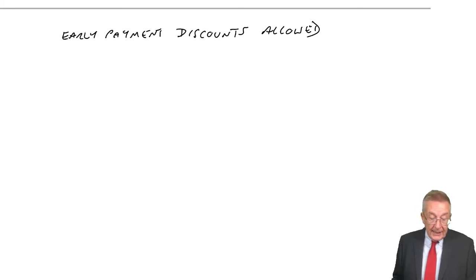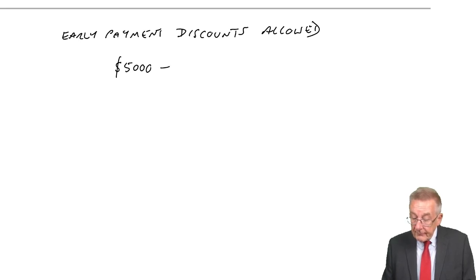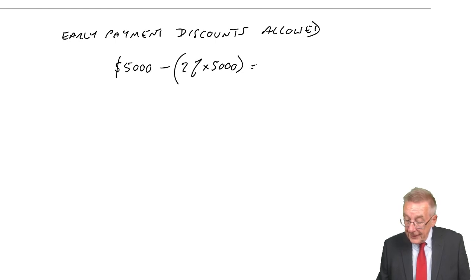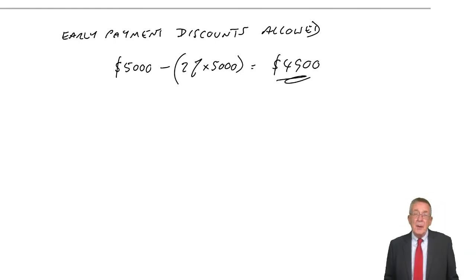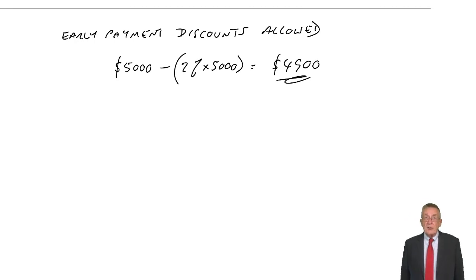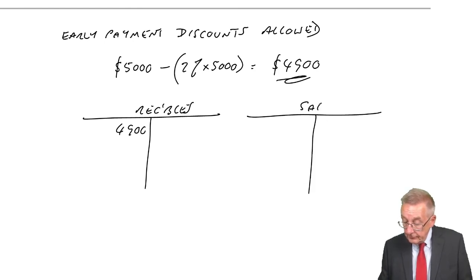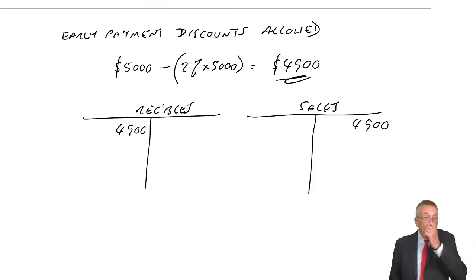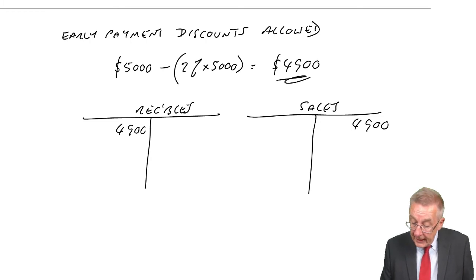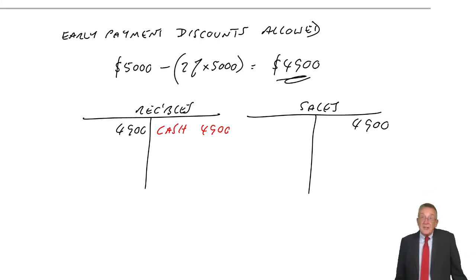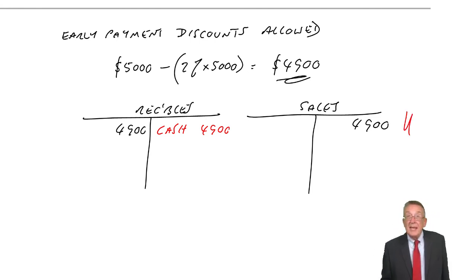Based on past experience, we expect the customer will take the discount. It's therefore wrong to record a sale of $5,000 when we know they're not going to pay us $5,000. We ask how much we expect to get: 2% of $5,000 is $100, so we expect $4,900. We debit receivables and credit sales with $4,900. Assuming the customer pays within 10 days as expected, they'll pay $4,900 — debit cash, credit receivables $4,900. The sale was effectively for $4,900, which is what appears in the statement of profit and loss.